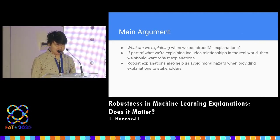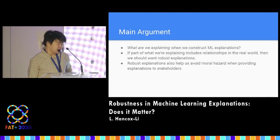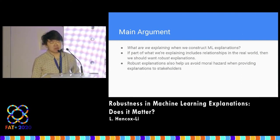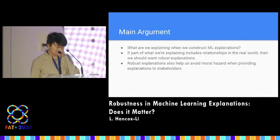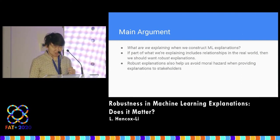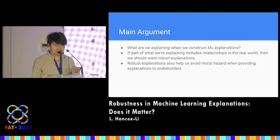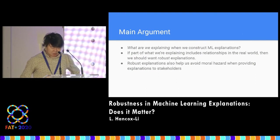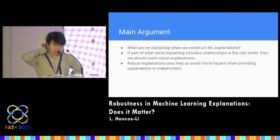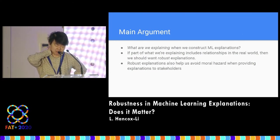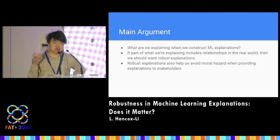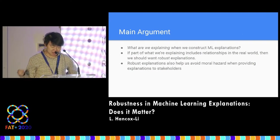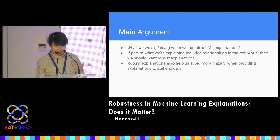The summary of my main argument: I start with the question of what are we explaining when we construct machine learning explanations. This question has often not been directly addressed in the ML explanation literature. If we think that part of what we're explaining includes relationships in the real world — not just relationships that our model makes up — then we should run robust explanations.